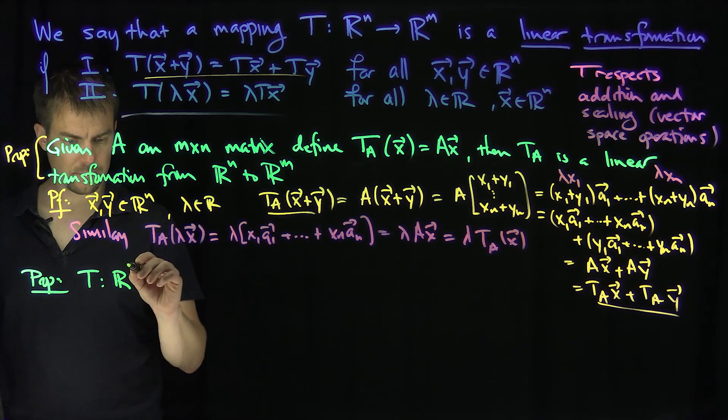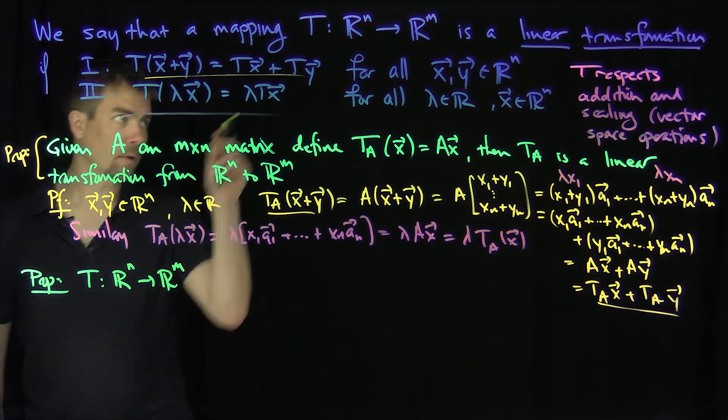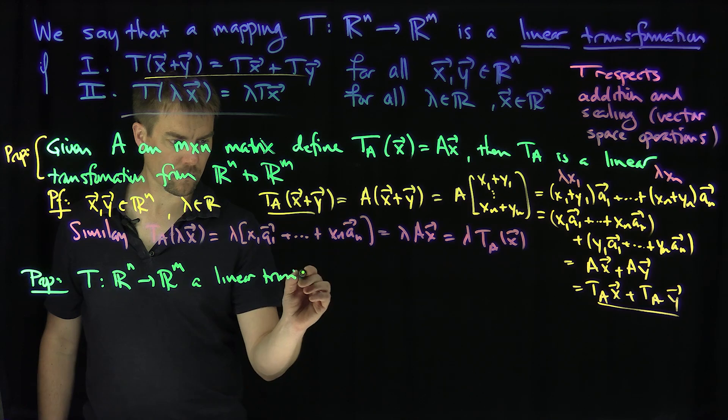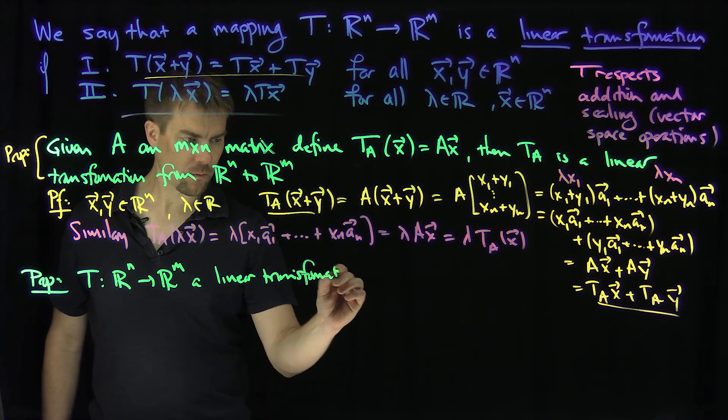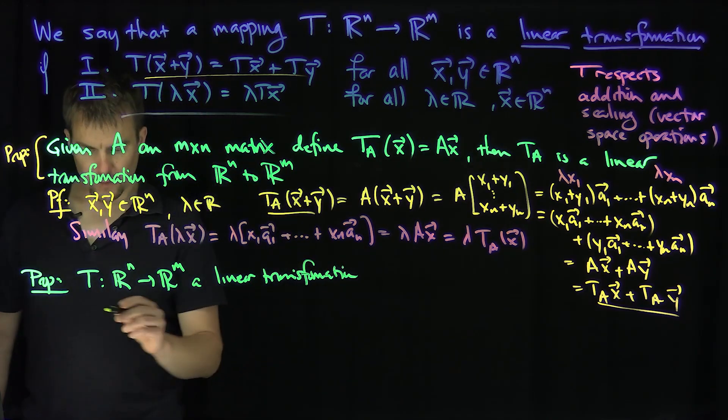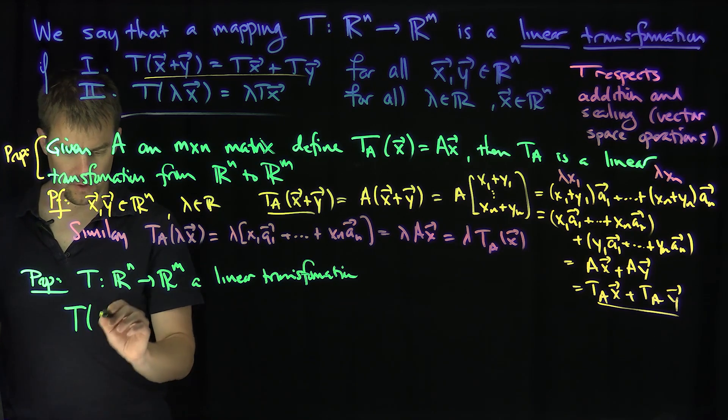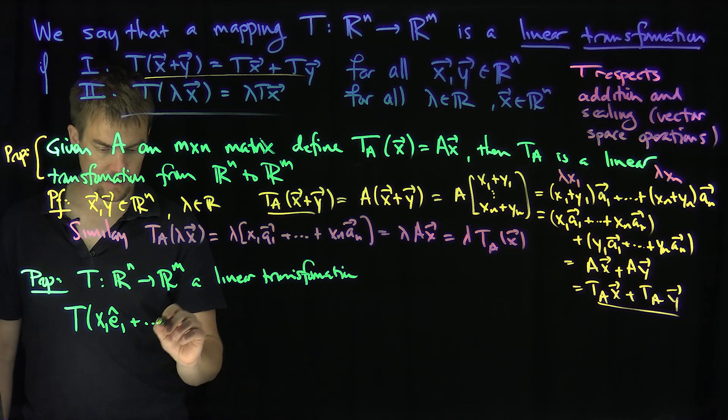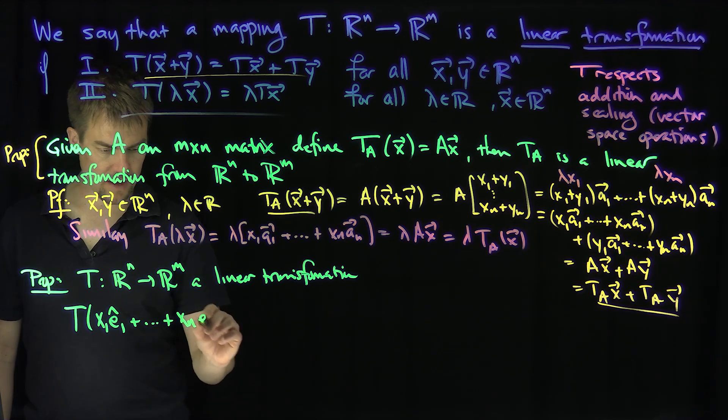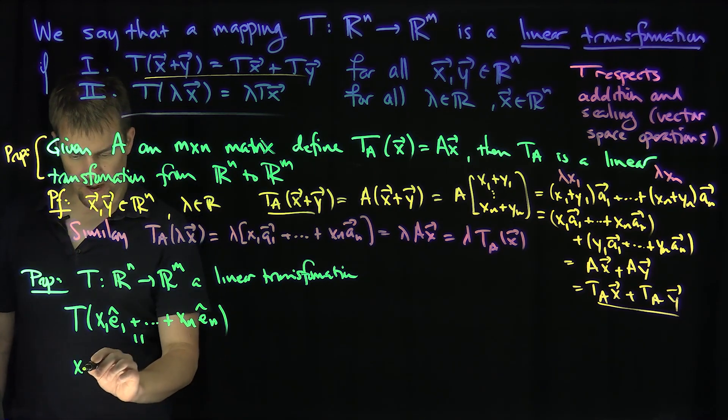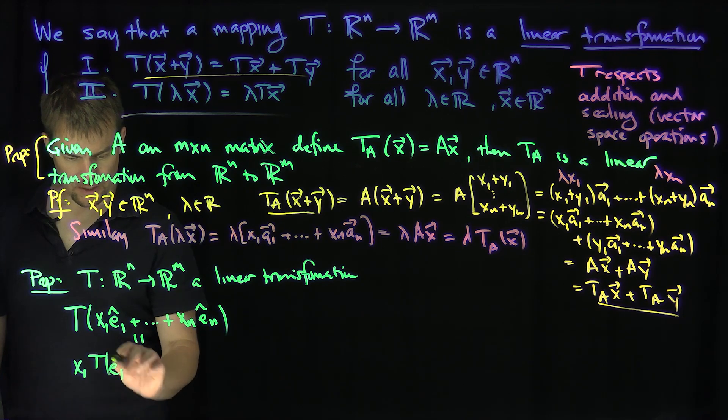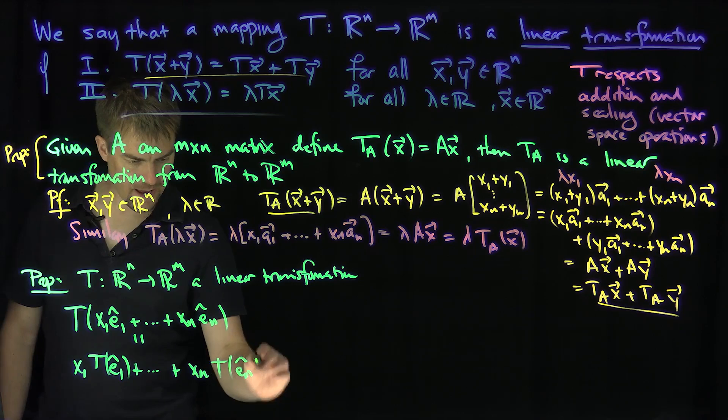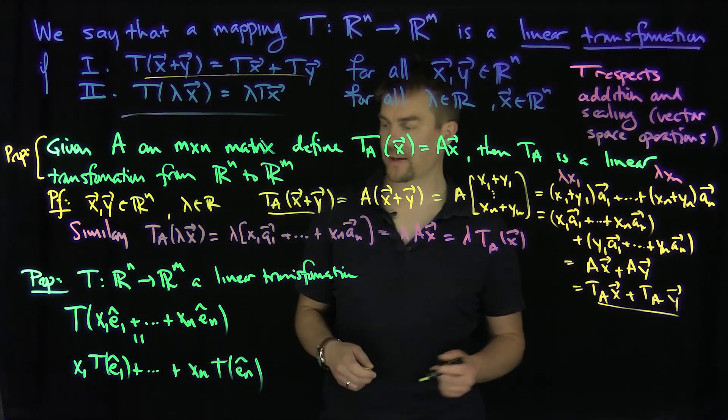Then what I can do is the following. Then T of x_1 E_1 hat, where that's the standard basis, plus x_n E_n hat by linearity has to be equal to x_1 of T E_1 hat plus x_n T of E_n hat. By this condition, just by induction.